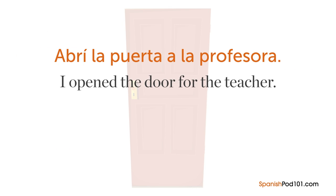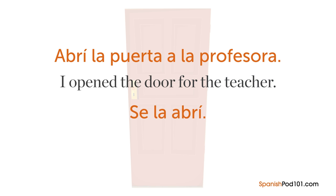One more example: 'Abrí la puerta a la profesora' — I opened the door for the teacher. 'La puerta' the door is the direct object, and 'a la profesora' is the indirect object — the person to whom the action goes. Using the pronouns: 'Se la abrí' meaning 'I opened it for her' — SE is for her and LA is the door. This way, we can refer to things or people already mentioned without having to repeat them.